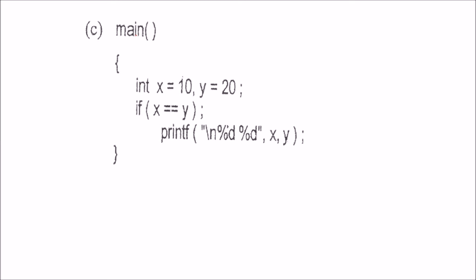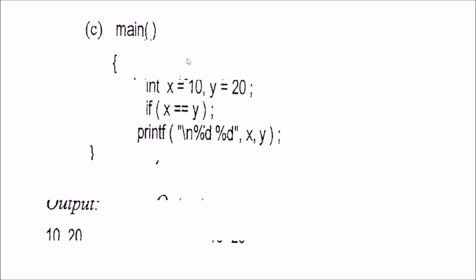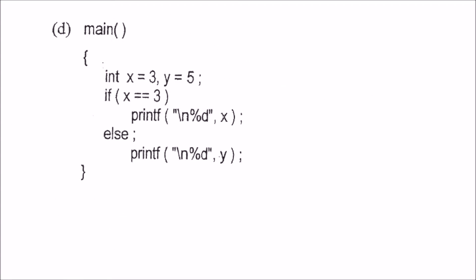Then x equals 10, y equals 20. If x is equal to y, there is a semicolon after the if statement, meaning you don't want to do anything in that case. So x will be 10 and y will be 20, and both 10 and 20 will be printed.